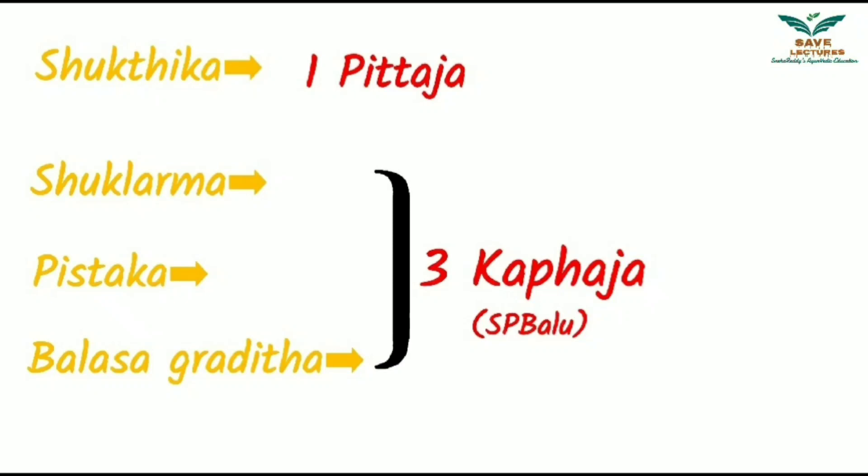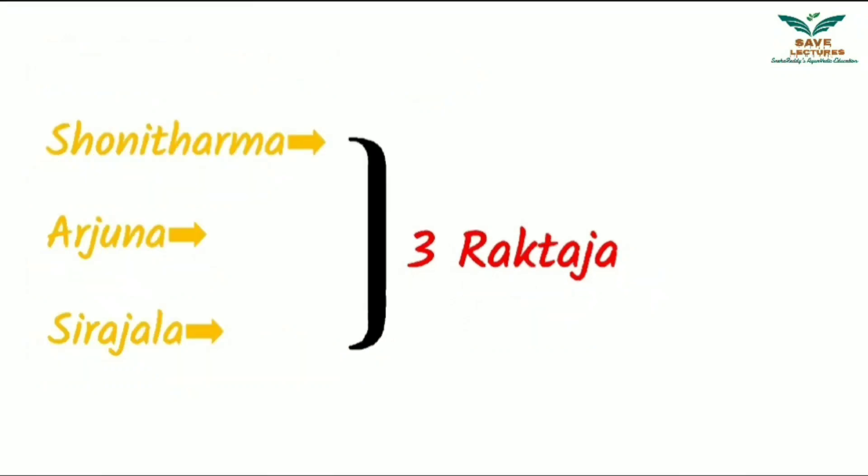Shuktika is Pittaja — it is the only Pittaja Shuklagatha Netra Roga. Shukla Arma, Pishtaka, and Balasa Gratita are the three Kafaja Rogas. Remember S.P. Balu as Kafaja, where S denotes Shukla Arma, P denotes Pishtaka, and Balu denotes Balasa Gratita — everyone knows S.P. Balu, he was a great singer. Shira Jala, Arjuna, and Shonita Arma are the three Raktaja Rogas. From the word Shonita, we can know it as Raktaja.